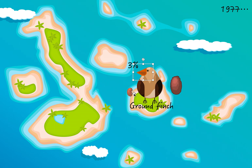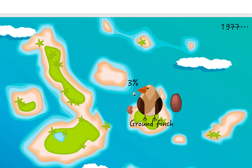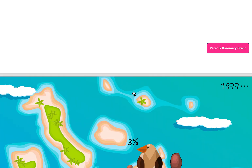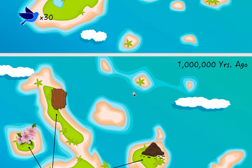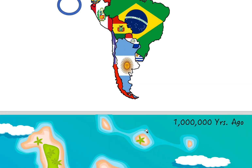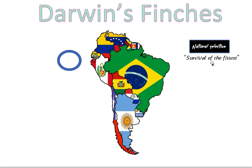So now they all have beaks three percent bigger, able to survive by eating these larger seeds since the smaller seeds weren't there anymore. That's all you need to know about these islands and how what happened there helped support the idea of natural selection and survival of the fittest.